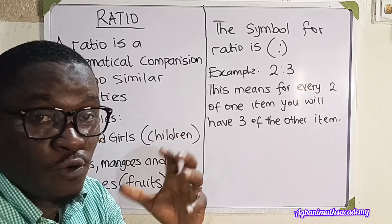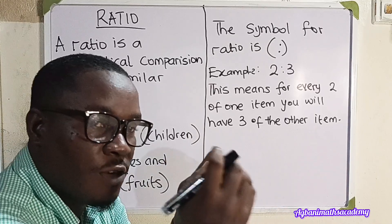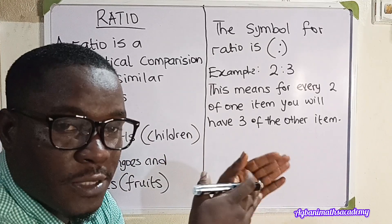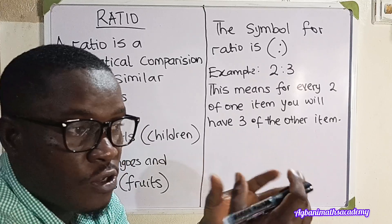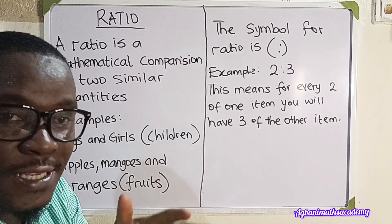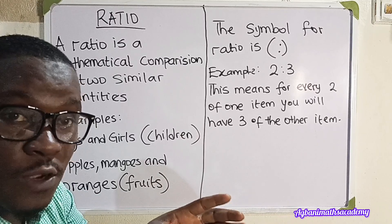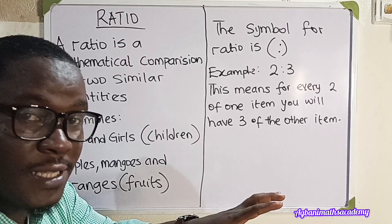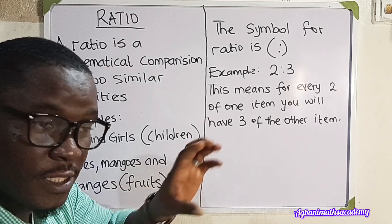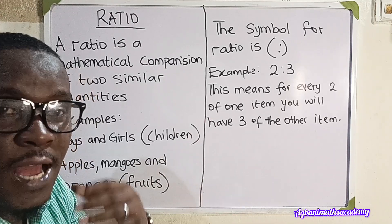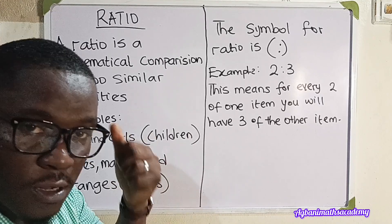In this lesson, we are going to look at three areas. First, we are going to look at the concept of equivalent ratios. Then next, we are going to look at how to calculate ratios when you are given the number of items. And finally, we are going to look at how to calculate the number of items when you are given the ratio. For each of these three areas, I will be leaving an assignment for you to solve at the end of each topic.